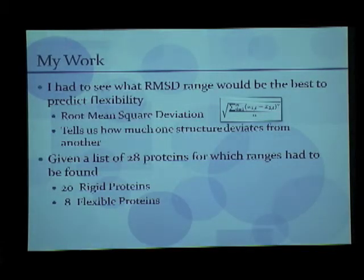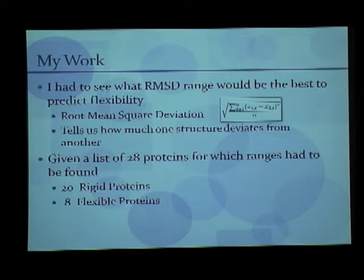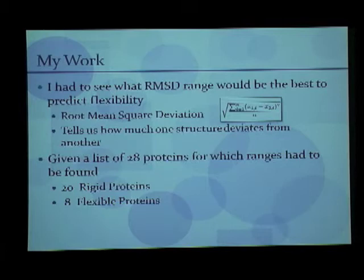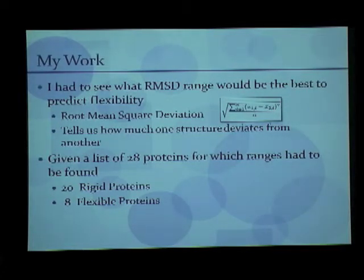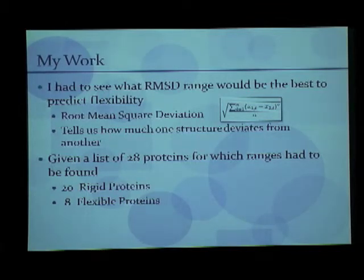My work here involved a script that predicts protein flexibility, which requires different models of a particular protein. Those models are created using structural relatives. I had to see what RMSD range of those structural relatives would best predict flexibility. RMSD is root mean square deviation, and it tells us how much one structure deviates from another. I was given a list of 28 proteins for which I had to determine which RMSD range would best predict flexibility — around 2.0 being more rigid and 0.8 being more flexible.